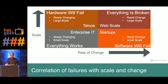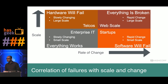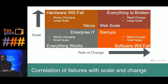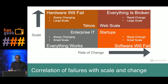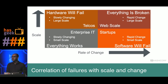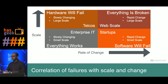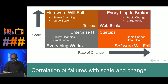At startups, scale depends on how much success the company is having, but change is really happening a lot as the business figures out what it wants to do. Then there's web scale — companies like Netflix, Google, Facebook — where features are churned out constantly and clusters are created and torn down all the time. In those places, we see everything break — software failures, hardware failures — but end users still get high quality of service. You don't see Facebook or Netflix going down when you're watching Breaking Bad.